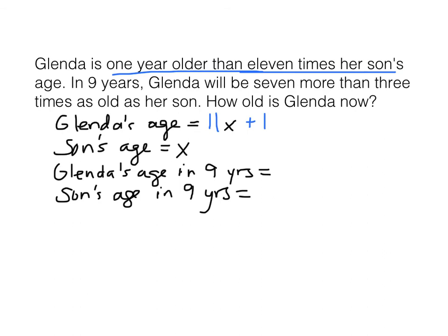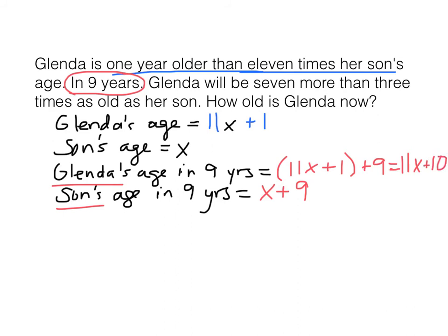This is not a trick — it's this straightforward. In nine years: if the son is X years old now, how old will he be in nine years? He'll be nine years older than X, so X plus 9. How old will Glenda be in nine years? She'll still be 11X plus 1, and then nine years older than that — so she'll be 11X plus 10 years old. That sounds awkward, but it works.